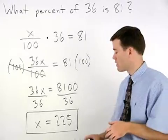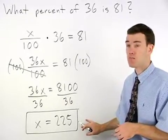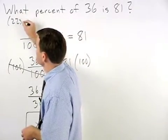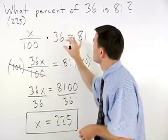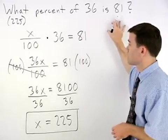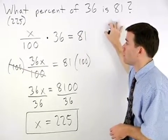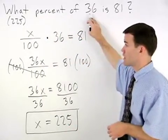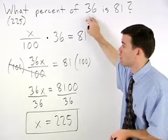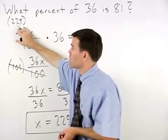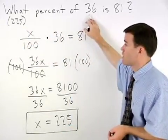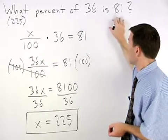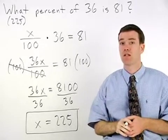Now let's check to see if our answer makes sense. We have 225% of 36 is 81. Well we know that 100% of 36 would be 36. So 225% of 36 should be a lot more than 36. So 81 seems to make sense.